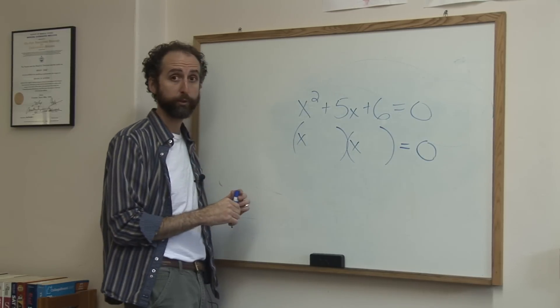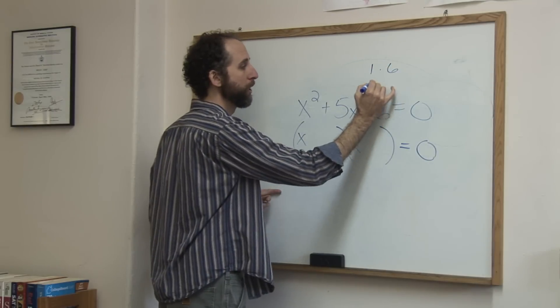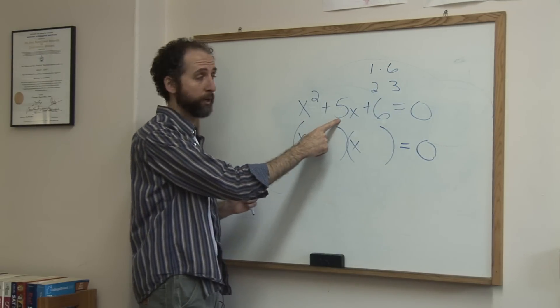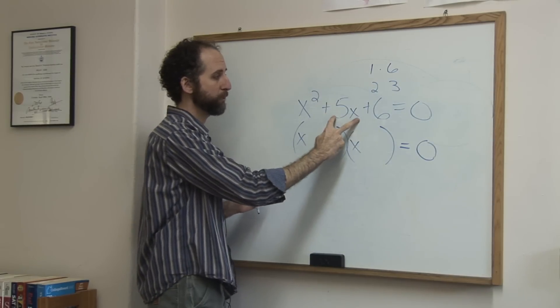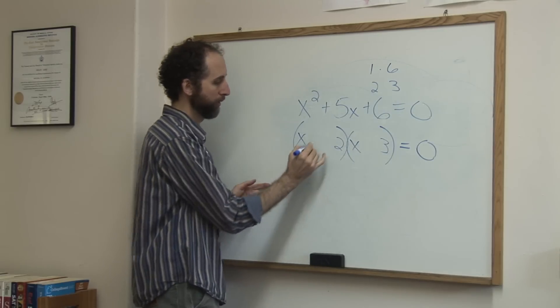Those two numbers, those two variables go there. The two things that multiply to be 6 could either be 1 and 6 or 2 and 3, and we want them to add, in this case, to be 5. So it's 2 and 3. 6 minus 1 would be 5, but because these are both plus, we're going to make them add. So that's a 2, that's a 3, they're both plus.